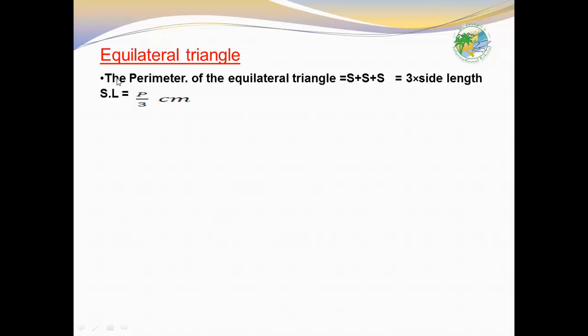The meaning of equilateral triangle: each side is equal in length. The perimeter of the equilateral triangle equals side plus side plus side, which equals 3 times the side length. The side length equals perimeter over 3.